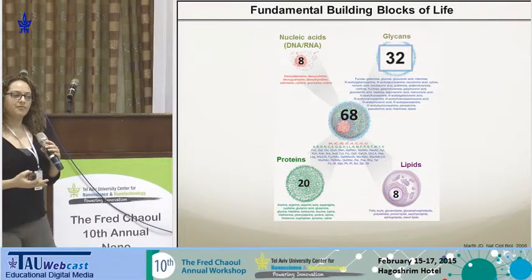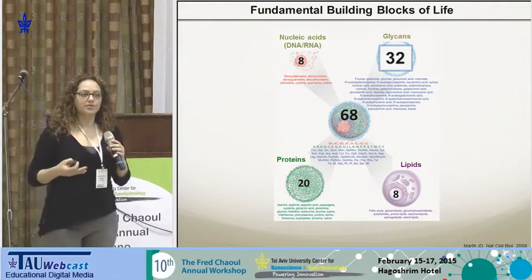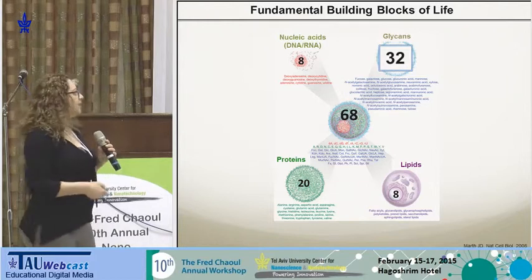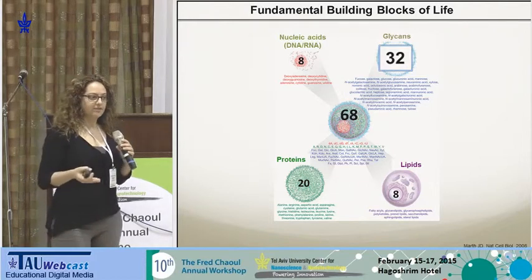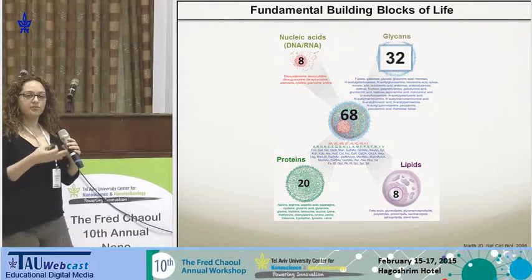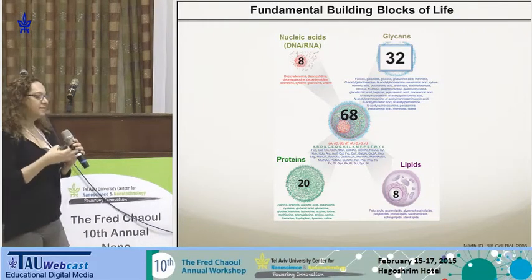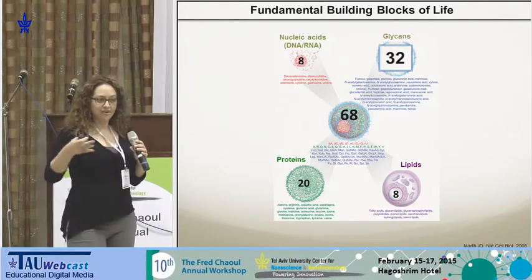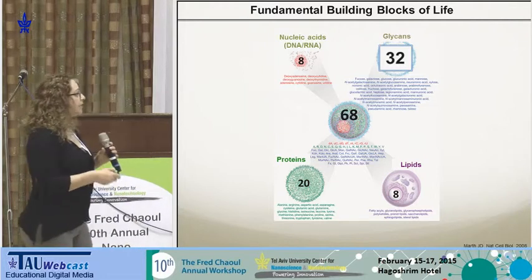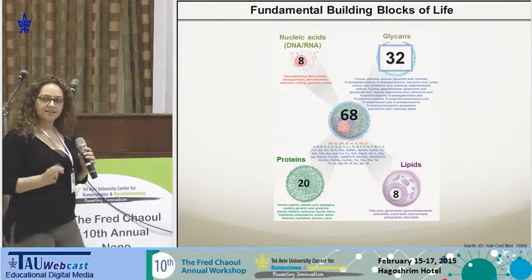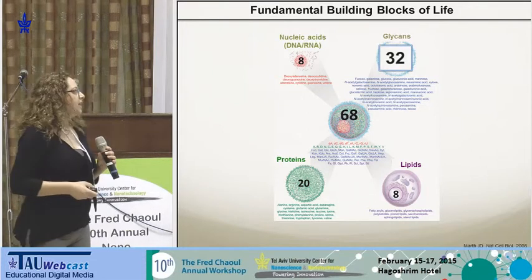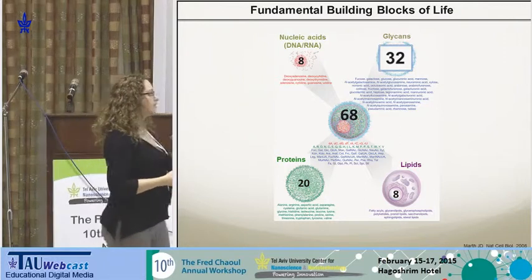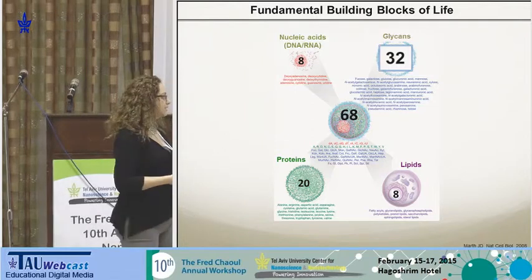If you think about the informational diversity in a cell, we all know about the template-driven process where a gene — a DNA — codes for the RNA sequence, and the RNA codes for the proteins. The informational diversity increases as we go down the line, because one gene can eventually be translated into different proteins. However, sugar expression in the cell is not a template-driven process. There are many enzymes that attach different sugars to lipids and proteins, generating a greater diversity of sugars on the cell surface.